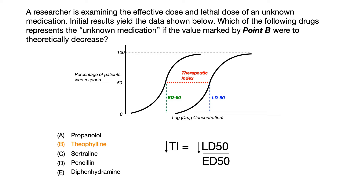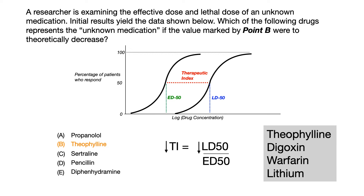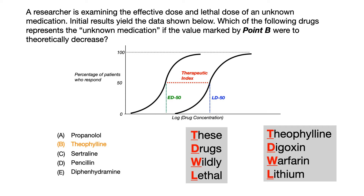By looking at these answer choices, we see four particularly safe medications and one with a narrow therapeutic index. You need to know the drugs that have extremely narrow therapeutic indices. Those four drugs are theophylline, digoxin, warfarin, and lithium. My mnemonic for remembering this is that these drugs are wildly lethal — T-D-W-L. T for theophylline, D for digoxin, W for warfarin, and L for lithium.